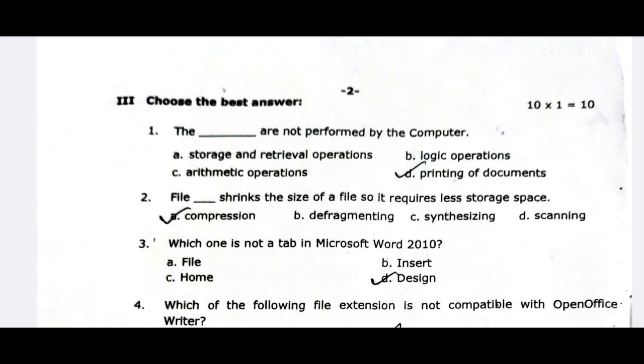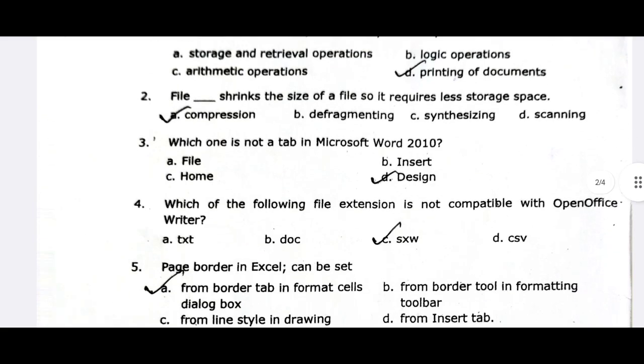The third one is: which one is not a tab in Microsoft Word 2010? In Microsoft Word 2010, IMPRESS is not a tab — that is the answer. The fourth one is: which file extension is not compatible with OpenOffice Writer? The text file, document file, CSV file, or SXW file — the SXW file is supported, so CSV is not compatible. That is the answer.